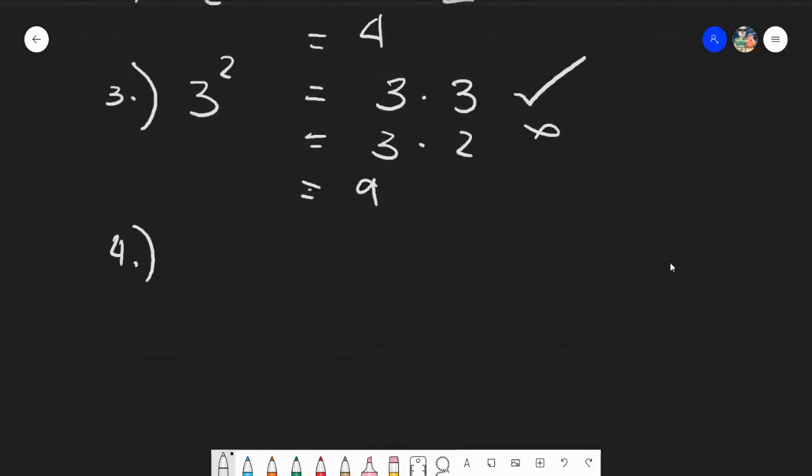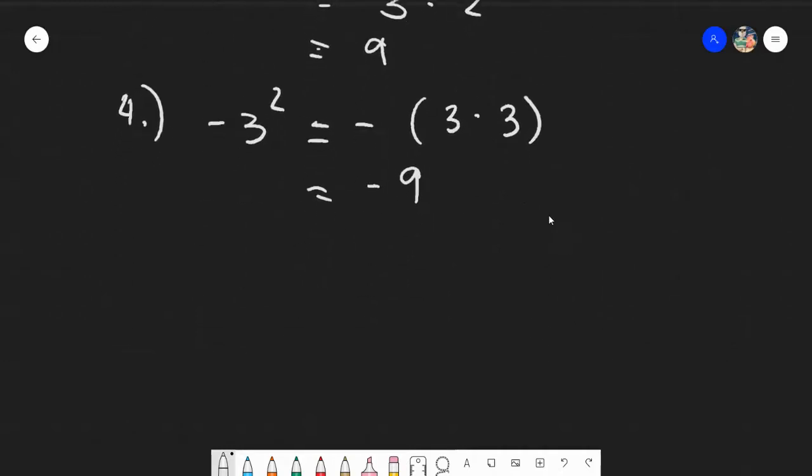Let's go to the fourth example. Say we have negative 3 squared. Now, the square here will belong only to 3 and not the negative. So therefore, it would be negative 3 times 3, and the answer here would be negative 9. This is a common issue again for students.